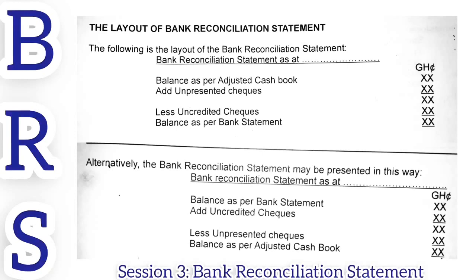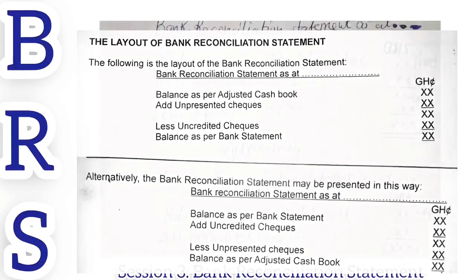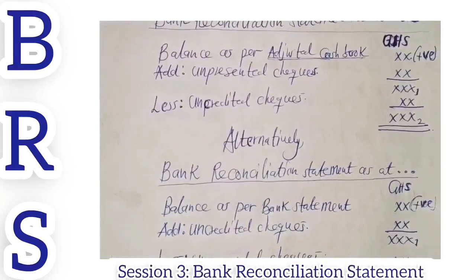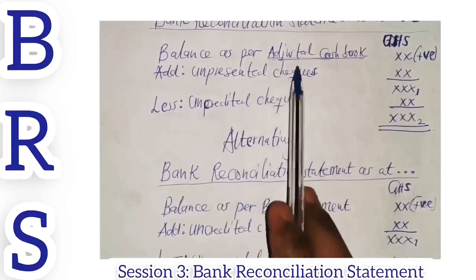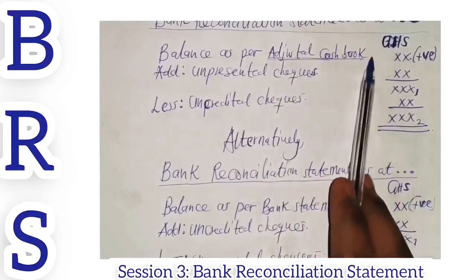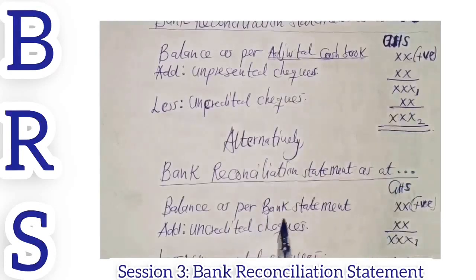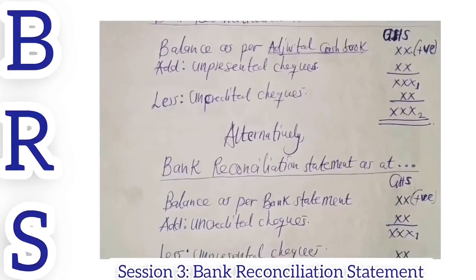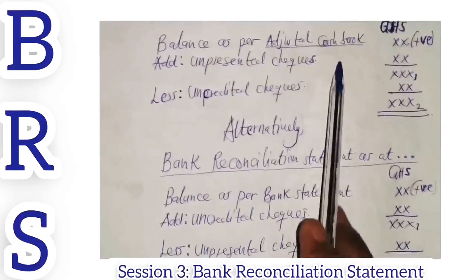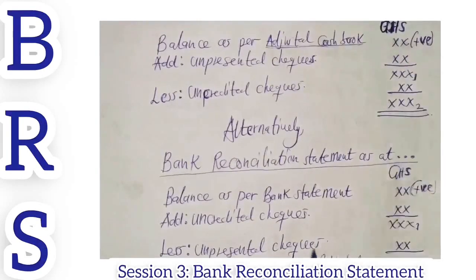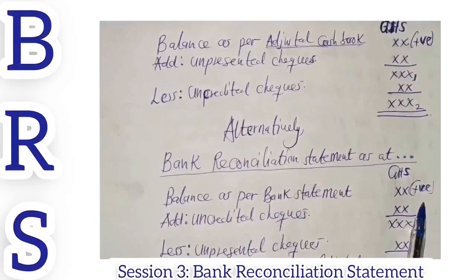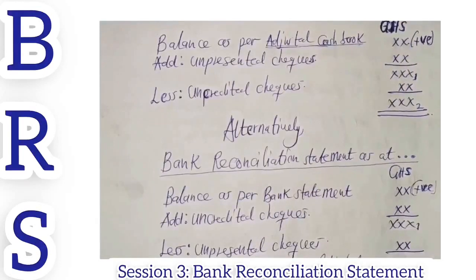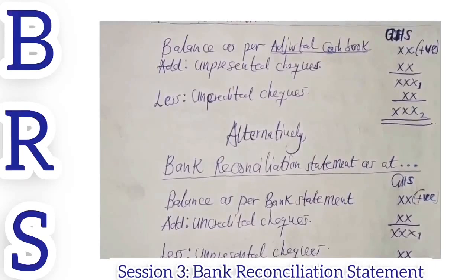One last thing before we close: what happens when we have a negative balance — whether it is the adjusted cash book balance or the bank statement balance? We said that all other things being equal, both balances should be in agreement. But when either carries a negative balance — an unfavorable balance — and you have to prepare a bank reconciliation statement on that basis, here is how it goes.